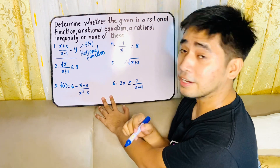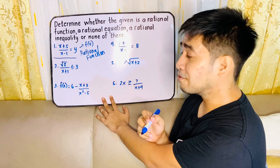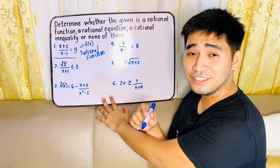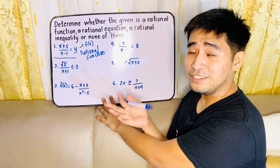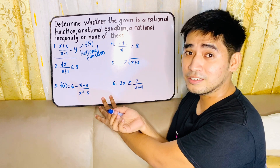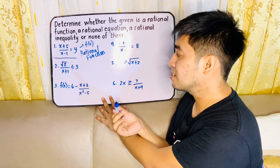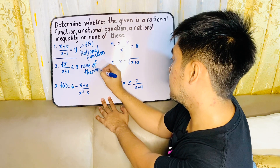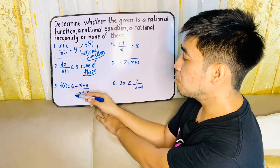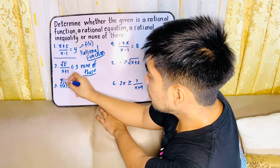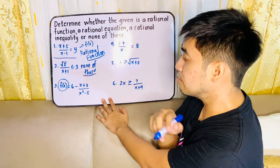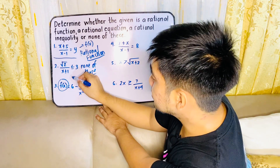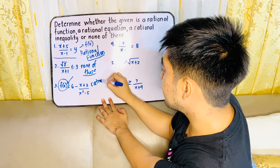For the third one, we are given f(x) = 6 minus x plus 3 over x squared minus 5. Again, if there is f(x), this is a function — we could finally say that this is a rational function. For number four, we are given 2 plus x all over x minus 1 is equal to 8. There is no variable y, so the only variable is x and there is an equal sign. Therefore, this is a rational equation.